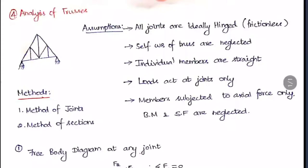The third assumption is the individual members are straight. We are assuming all the members are straight members only. The loads act at joints only, so in all the problems, the load will be acting at the joint or supports only. In between it cannot act.